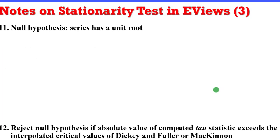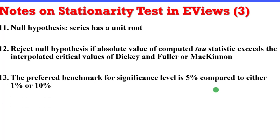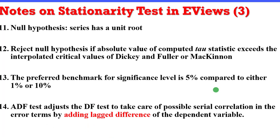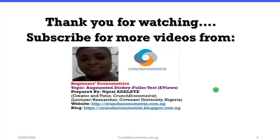The null hypothesis is always that the series has a unit root. Reject the null hypothesis if the absolute value of the computed tau statistic exceeds the interpolated critical value of Dickey and Fuller. The preferred benchmark significance level is 5%, compared to either 10% or 1%. The difference between the ADF and DF tests is that the augmented Dickey-Fuller adds lagged differences of the dependent variable to account for possible serial correlation in the error terms. Always plot the graph of the differenced series to visualize its nature. Thank you for watching — subscribe for more videos from Crunch Econometrics.